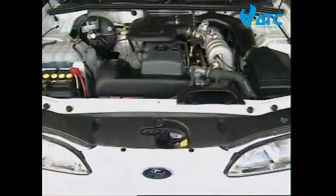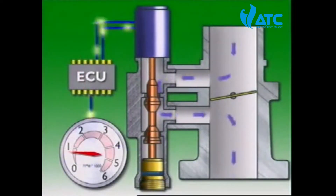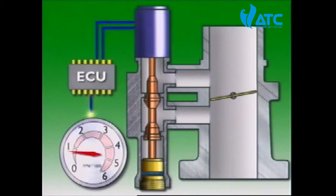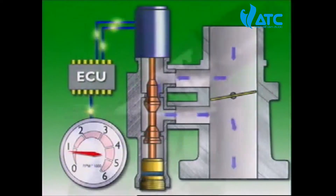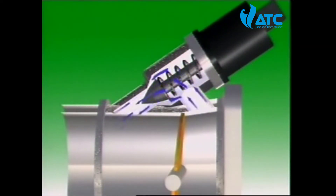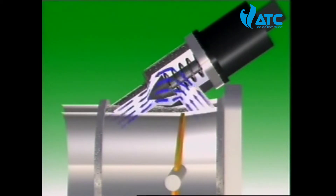How much air bypasses the throttle plate can be controlled automatically by the ECU. It receives data on idle speed and idle conditions and uses it to provide an output to a solenoid-operated taper valve or to a stepper motor pintle. The valve varies the opening of the bypass passageway and changes the idle speed to suit.